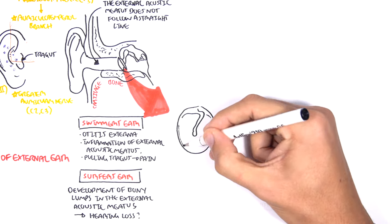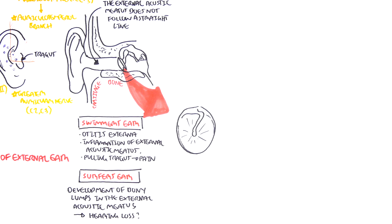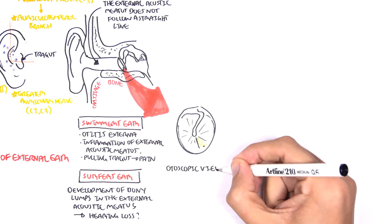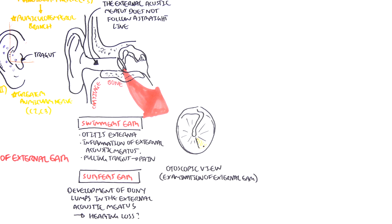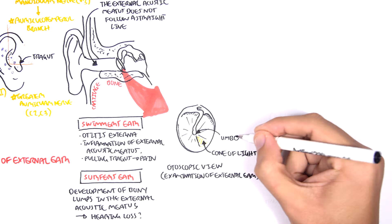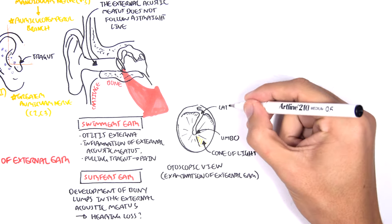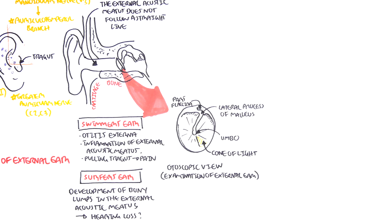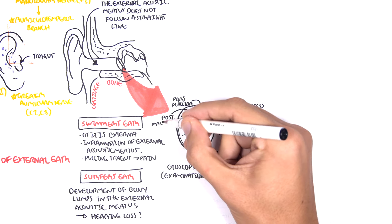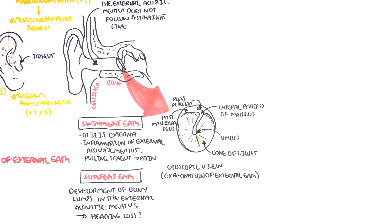Let us now look at the eardrum. This is what you see on an otoscopic view, where you are examining the external ear. So on the eardrum, we're going to look at some important parts of the examination. Here is the cone of light, the umbo, the lateral process of the malleus, the pars flaccida, and the posterior malleolar folds.